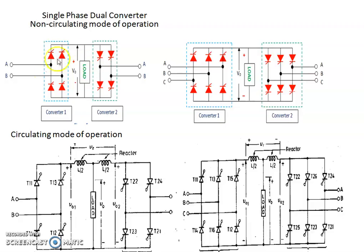The non-circulating mode of operation has some delay, because we provide a time delay of 10 to 20 milliseconds between the operation of converter 1 and converter 2, in order to avoid the effect of circulating current. In non-circulating mode of operation, either converter 1 or converter 2 operates at a time, and after the complete turning off of converter 1, we turn on converter 2.